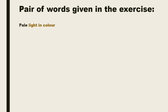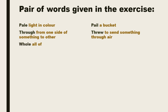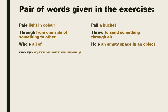The first word is pale, spelling P-A-L-E, which means light in color. The other one, pail, spelling P-A-I-L, means a bucket. The next one is throw, which means to send something from one side to the other. And through, which means to pass something from one side to another. The next word is whole, spelling W-H-O-L-E, and hole, spelling H-O-L-E, which means an empty space in an object. The next word is accept, which means to take something, and except, which means not including.